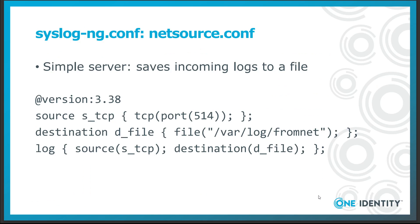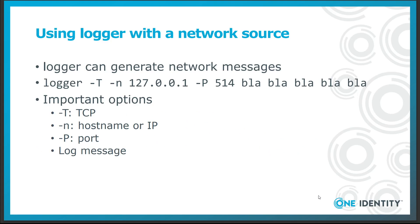The following syslog.ng configuration implements a very simple syslog.ng server. Save this as net-source.conf on your test machine. Stop the running syslog implementation and start syslog.ng with this configuration in the foreground with debugging information enabled. From another terminal you can now use the logger command to generate test messages. Note that the exact parameters of logger might be different on your system.